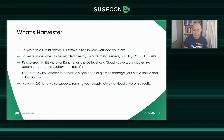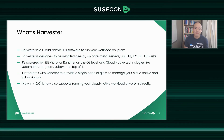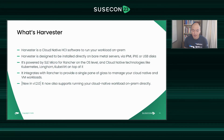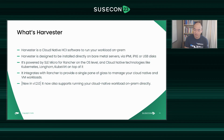You can have a single Harvester cluster on its own without needing Rancher to manage it. But once you have multiple Harvester clusters, Rancher provides visibility into all of them. New in the 1.2 release: we also support running your cloud-native workload on-prem directly. This is a new feature many customers have been asking for and wanting more flexibility from, and this is how we do it. The 1.2 release schedule will be announced later.